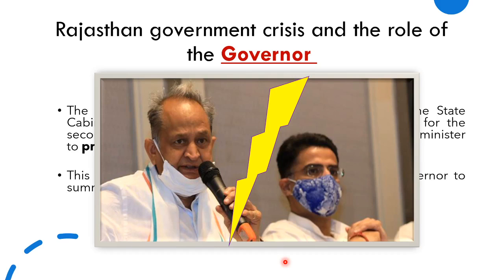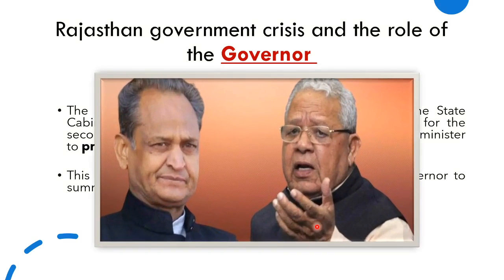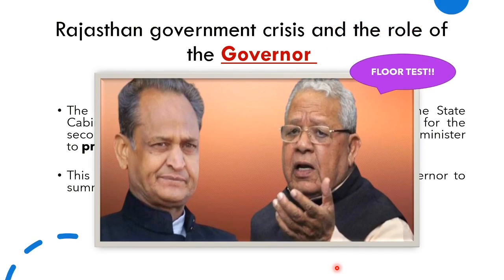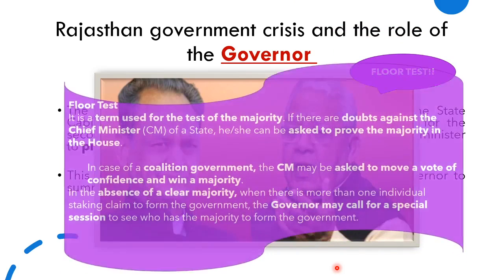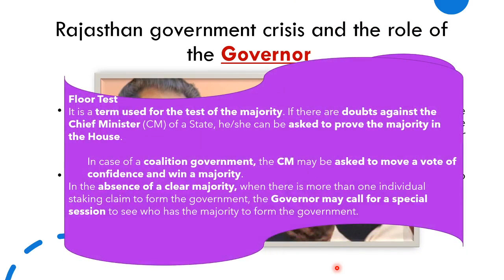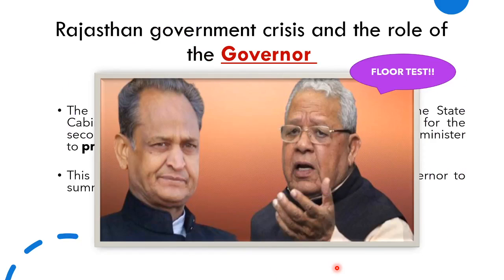When any government becomes unstable, the next step involves the governor. The governor of Rajasthan is Kalraj Mishra. Generally, the role of the governor is to call for a floor test. A floor test is a term used to test the majority. If there are doubts against the chief minister of a state, he or she can be asked to prove the majority in the house. If the government is about to fall and the majority is over, the governor says you have to prove yourself on the assembly floor.